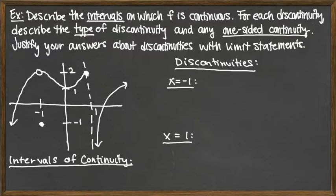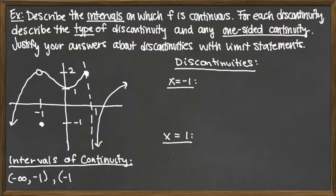Looking at the intervals of continuity, the domain starts at negative infinity, and the first place we're considering is x equals negative 1. At x equals negative 1, I see both the left and right limits matching to create that hole, which is attached to both sides, but the solid dot — the function value — is somewhere else entirely. It's isolated, not attached to the left or right. So we cannot include it in either interval. It's not left continuous and not right continuous, so neither endpoint at negative 1 is included.